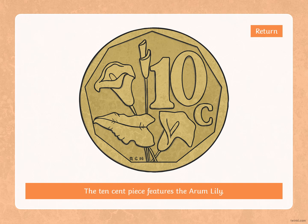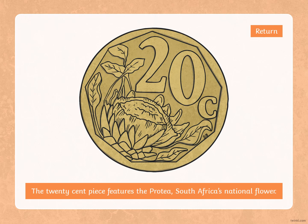If we look on the screen now, you can see a 10 cent coin. The 10 cent coin features the arum lily. The 20 cent coin features the protea, which is South Africa's national flower and also South Africa's cricket team's name.